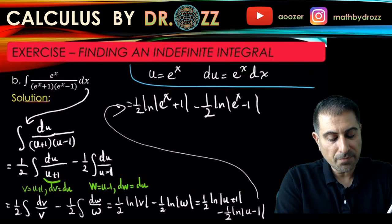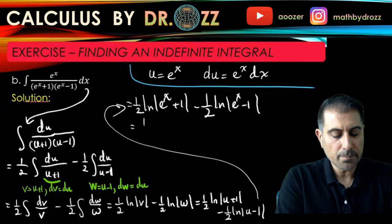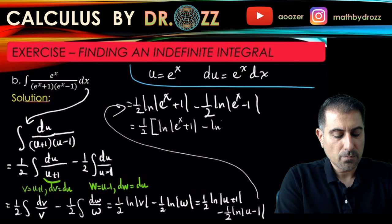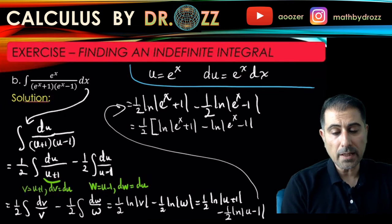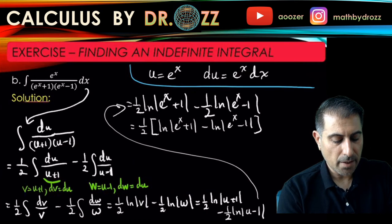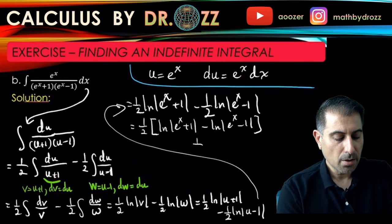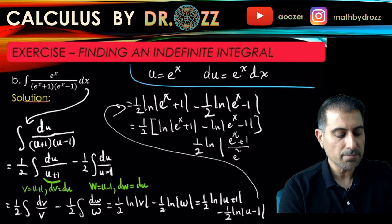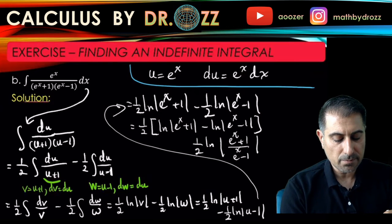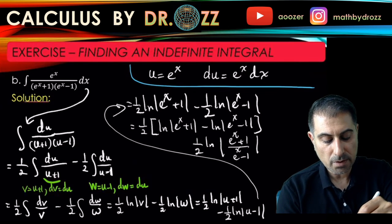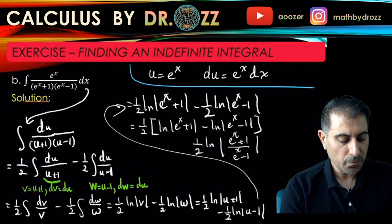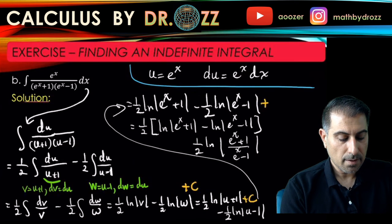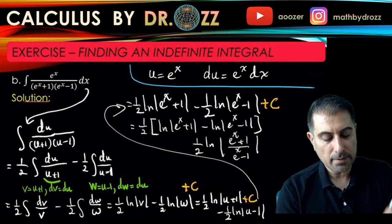So I can further simplify this by pulling out 1/2. And now since we have the difference of two ln functions, I can write it as a quotient: 1/2 ln of (e^x + 1)/(e^x - 1). And obviously we always add plus C. Don't forget to add plus C at each step as well.